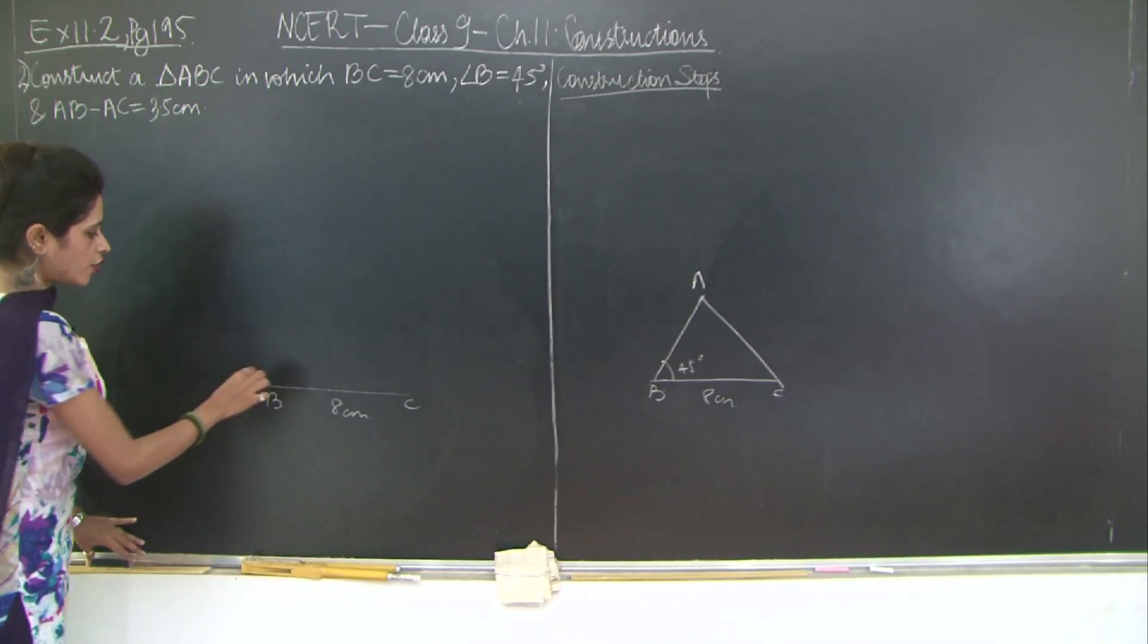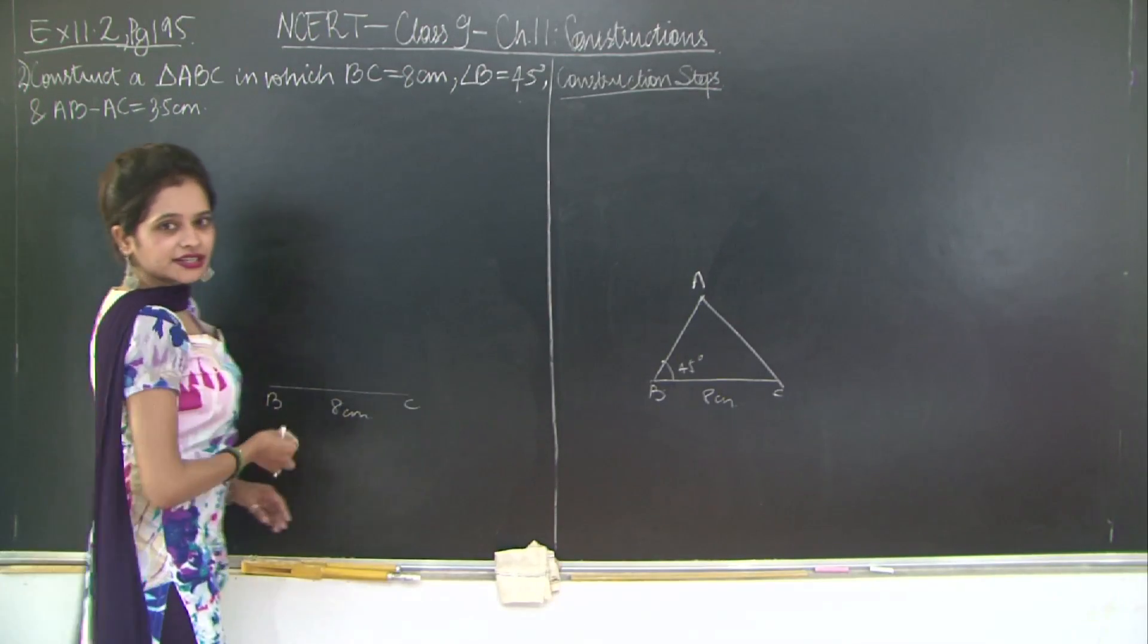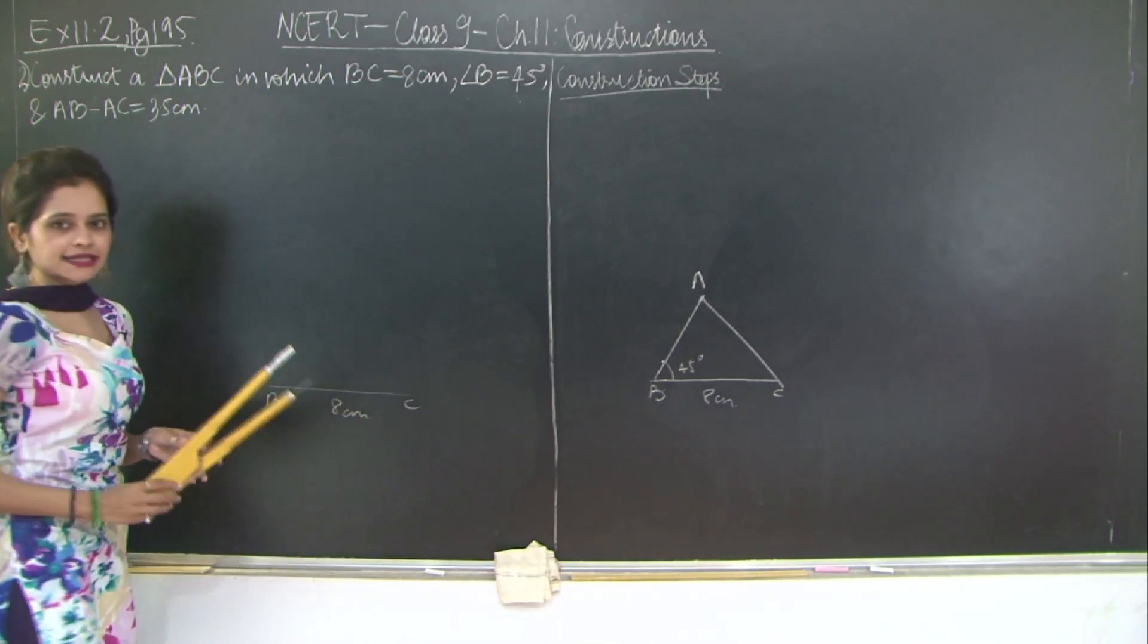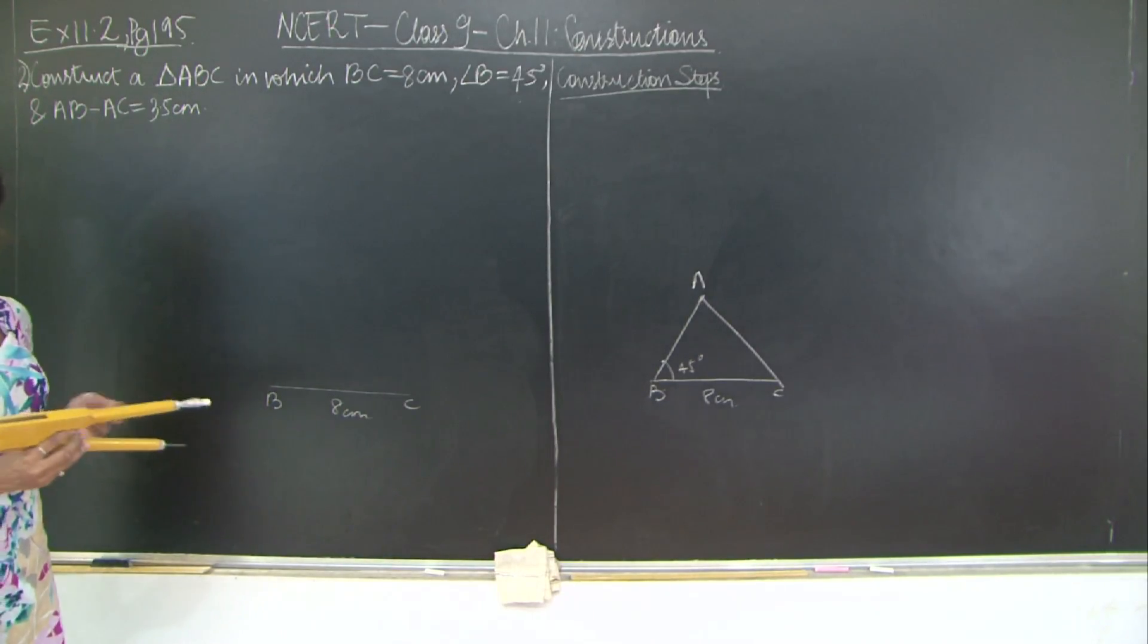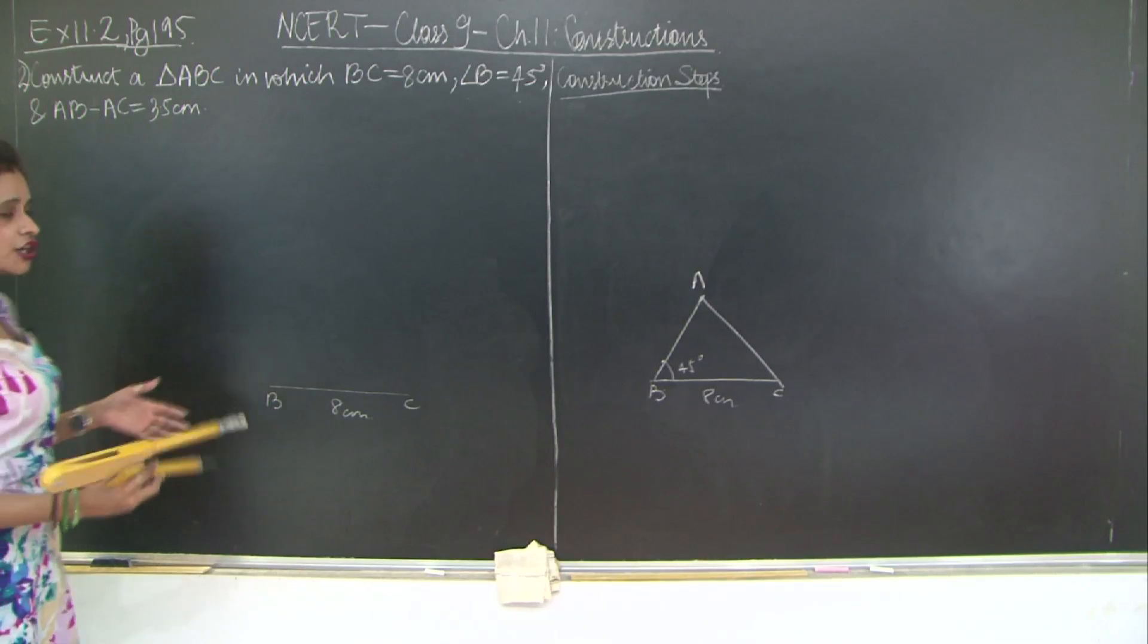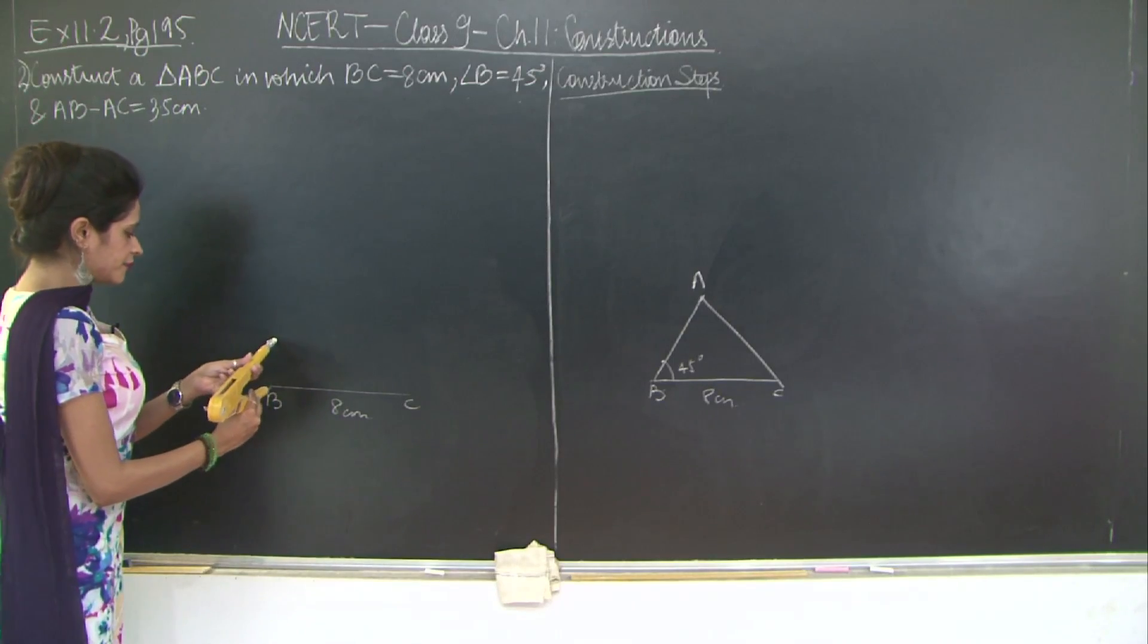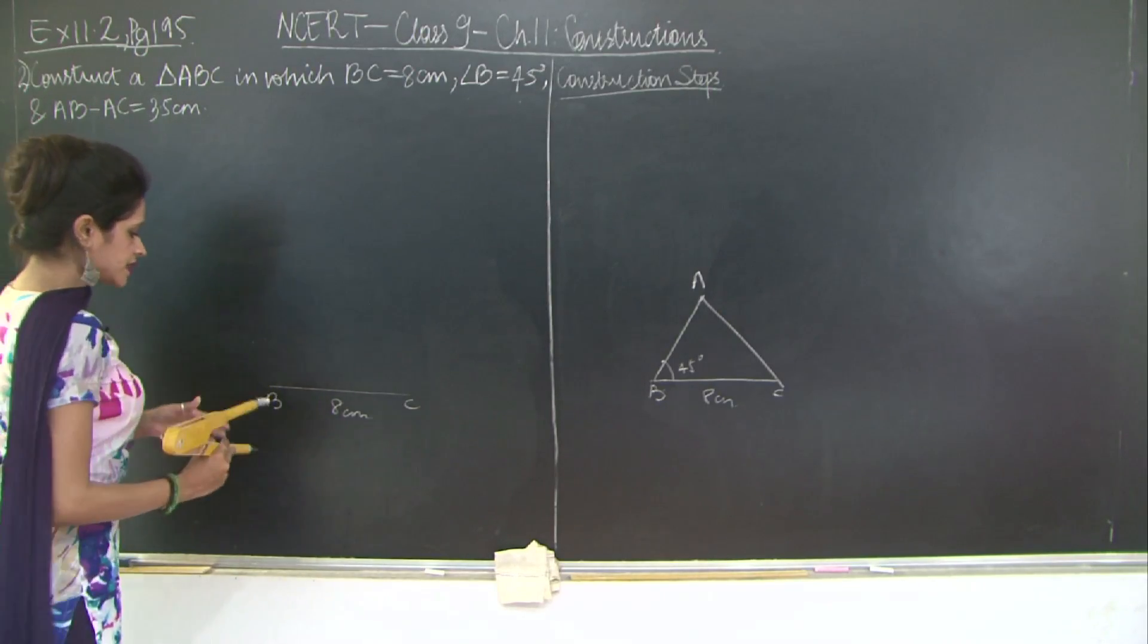Then I'm going to draw an angle of 45 degrees, that's angle B. First I'm going to take 90 degrees and bisect it. You can even draw 60 degrees, bisect it, and further bisect to get 30 degrees, then half of 30 degrees which would be 15 and added up. I prefer taking 90 degrees.